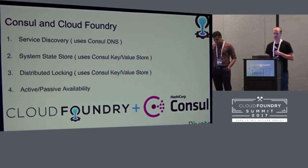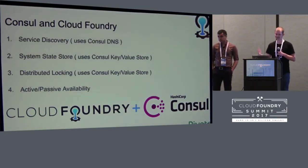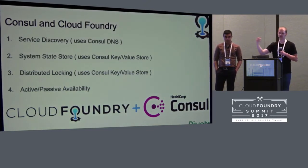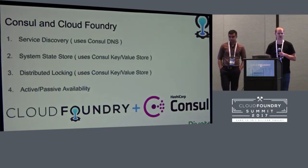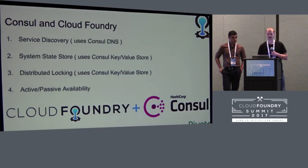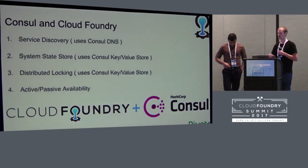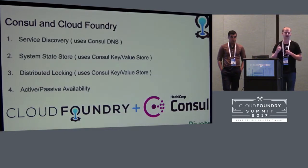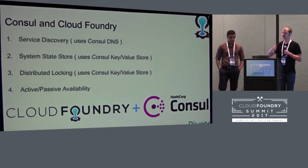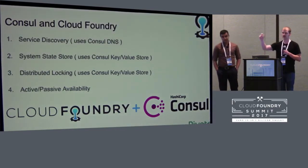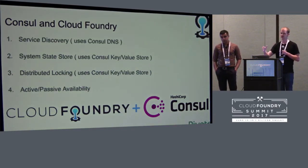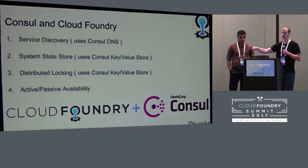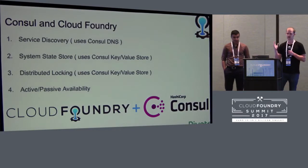How do we use Consul in Cloud Foundry? We use it for service discovery mainly — different components register themselves and other components can find them. We use it as a system state store, where some metadata information is stored in Consul's key-value store. It's also used primarily by Diego and a few other components for distributed locking, so we can achieve the active-passive availability model. Basically, you have N system components and you want one active node accepting traffic; if that node dies, a passive node takes a lock and any component wanting to talk to that system discovers it through Consul, so you only talk to one at a time.